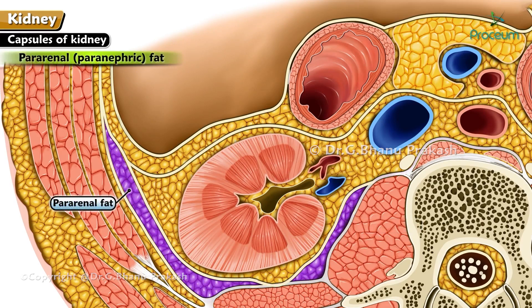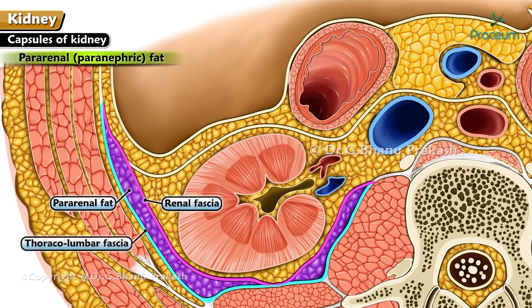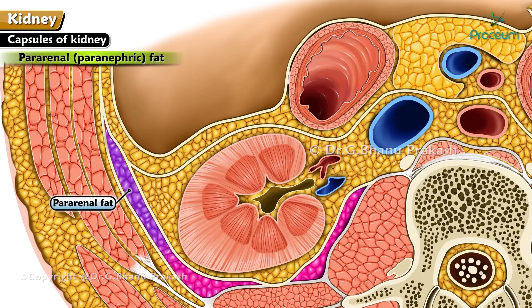Pararenal or paranephric fat lies between the renal fascia and anterior layer of thoracolumbar fascia, containing fat more abundant posteriorly and towards the lower pole of the kidney. It acts like a cushion for the kidney.